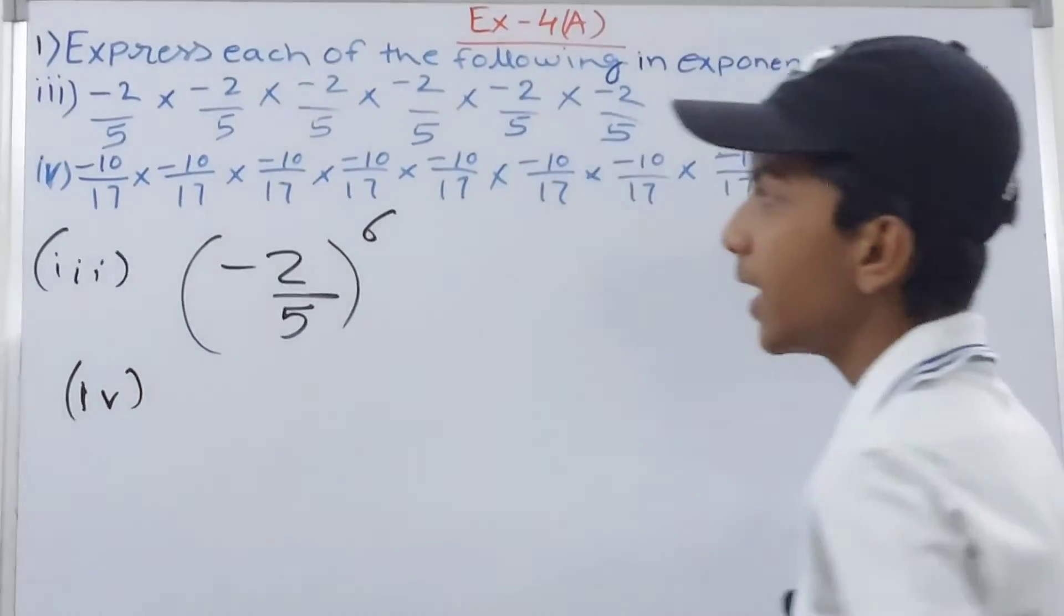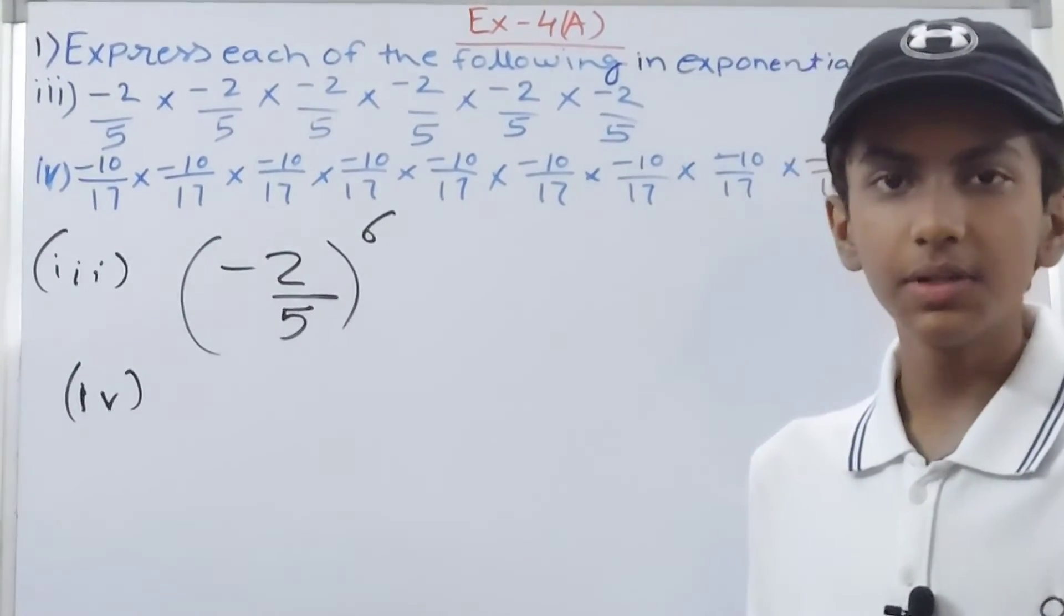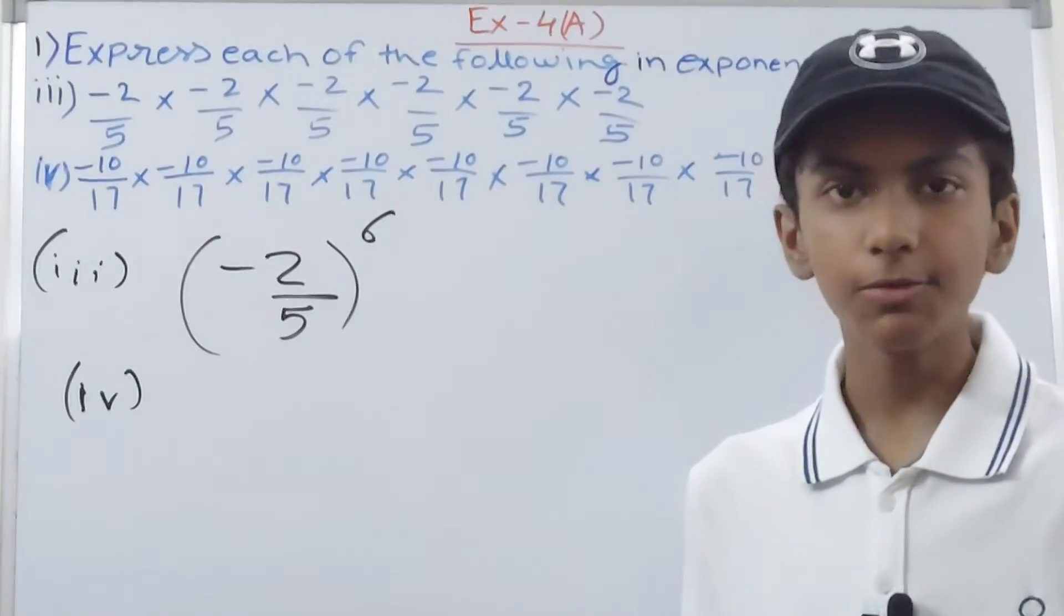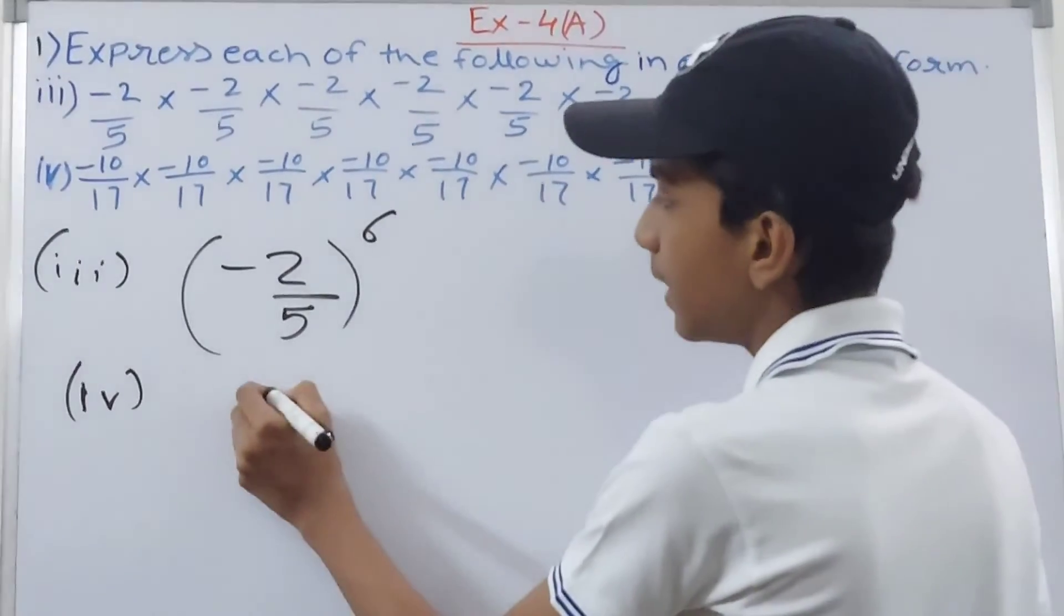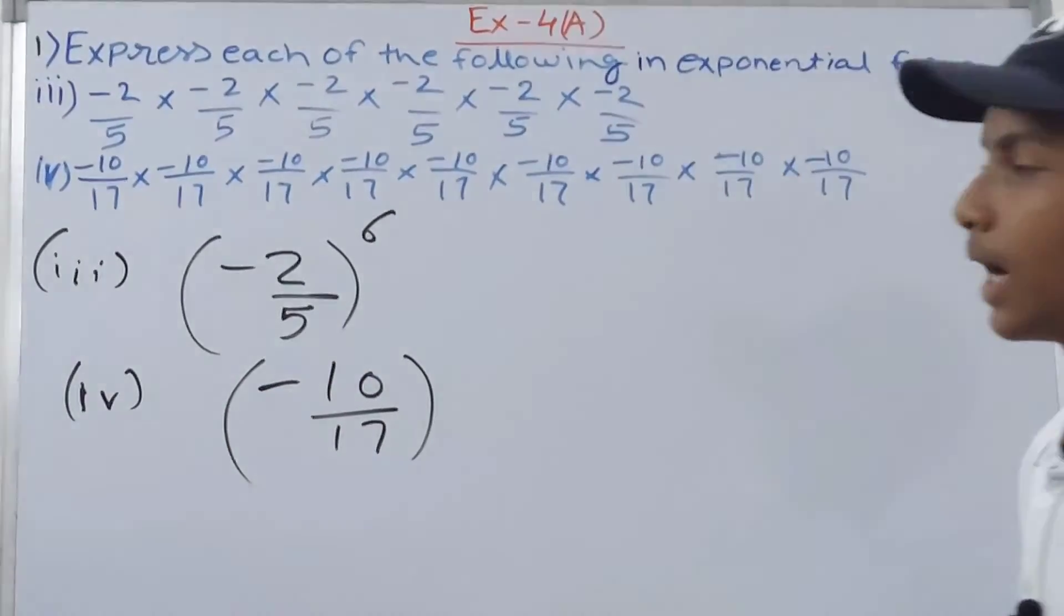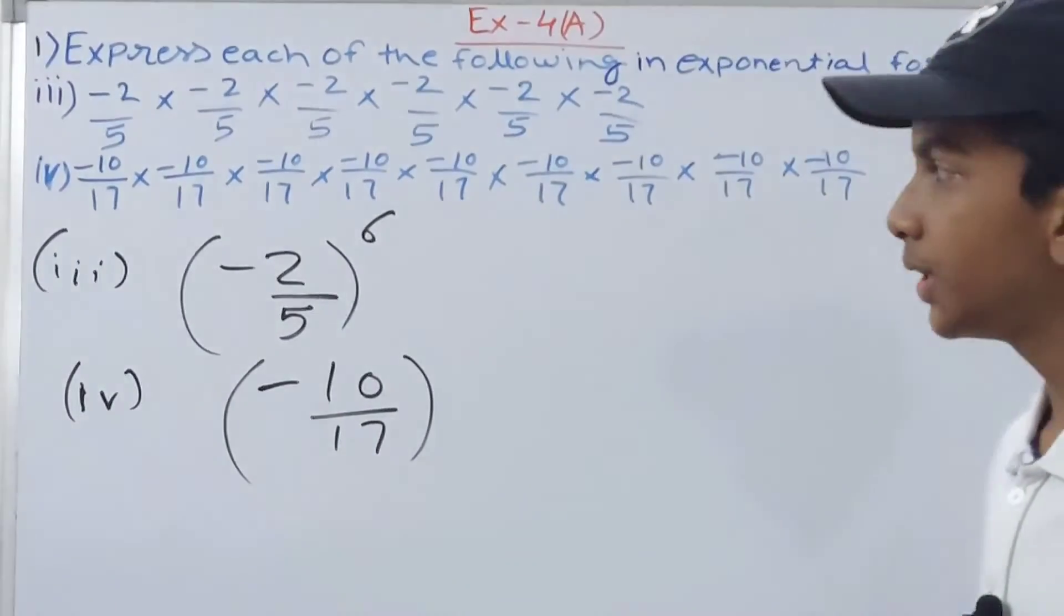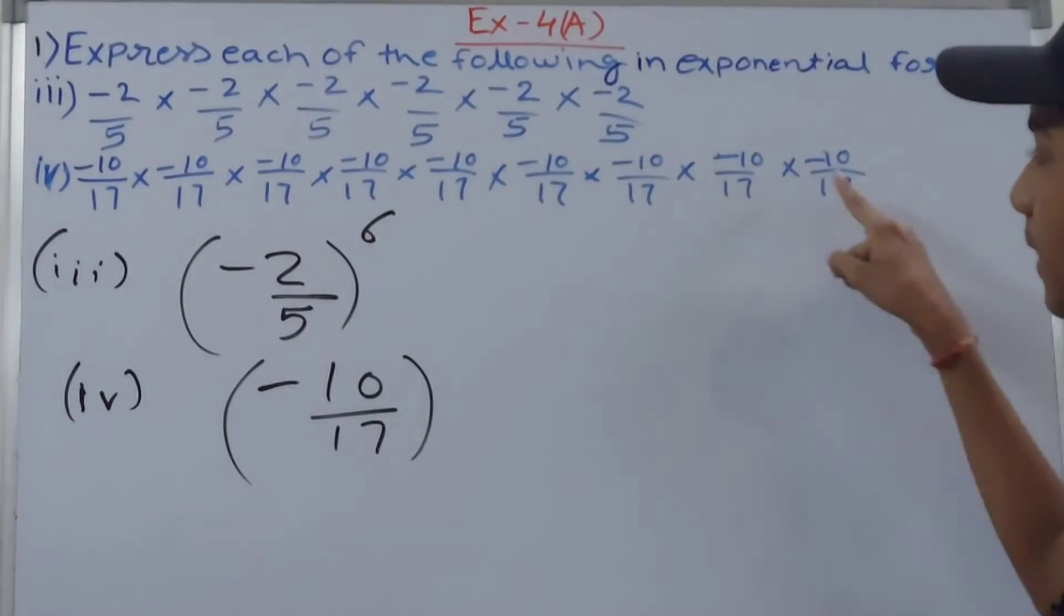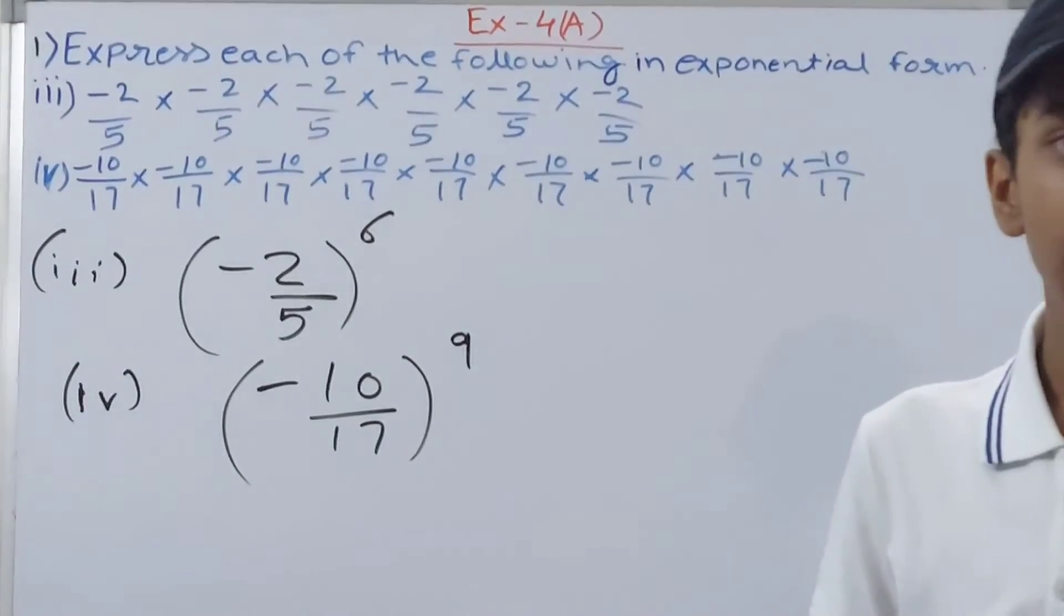Then the fourth one is minus 10 upon 17. Again, same thing: minus 10 upon 17 is the number that is being multiplied by itself, so this becomes our base. We'll have it like this: minus 10 upon 17 is our base. How many times is it being multiplied by itself? That will be the exponent. Count: 1, 2, 3, 4, 5, 6, 7, 8, 9. So 9 times, 9 becomes our exponent.